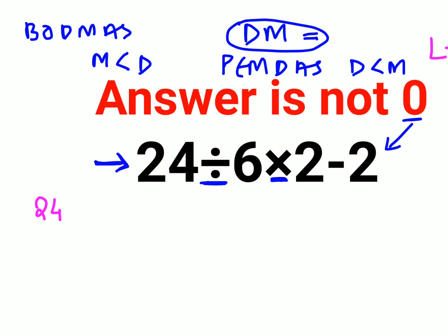A division sign, you can always follow the rule of KCF, meaning keeping the first number as it is. We kept 24 as it is, changing the division sign to multiplication, and F stands for flipping or taking reciprocal of 6, that is 1 upon 6, and you will keep the rest as it is.